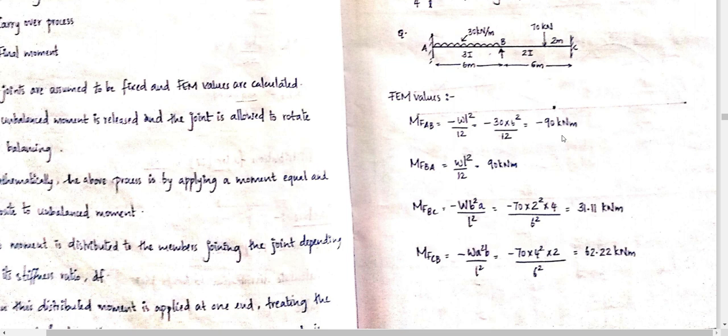M of BA is WL squared by 12, with full equal distribution, giving positive 90 kN per m.